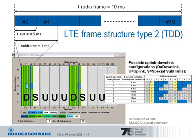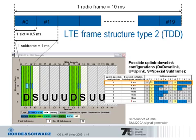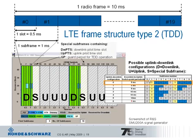Let's examine uplink-downlink configuration 0, also shown in the screenshot. Subframe 0 is a downlink subframe, shown with user data in green in the downlink. Subframe 5 similarly carries downlink data. Subframes 1 and 6 are special subframes, each carrying a downlink pilot time slot (DwPTS), an uplink pilot time slot (UpPTS), and a guard period for TDD operation to switch from downlink to uplink.